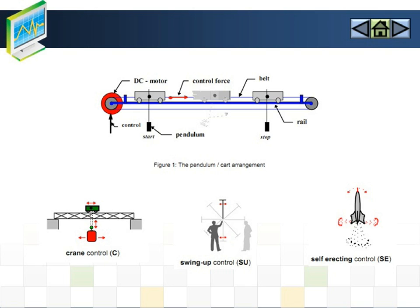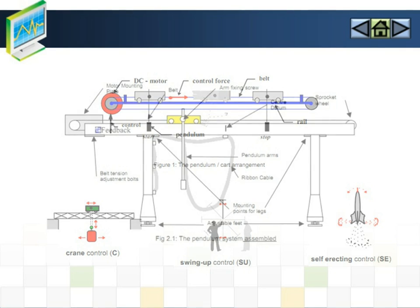There are three inverted pendulum control problems: swing-up, stabilization, and tracking problem. There are several methods that have been proposed to solve these problems on the inverted pendulum.